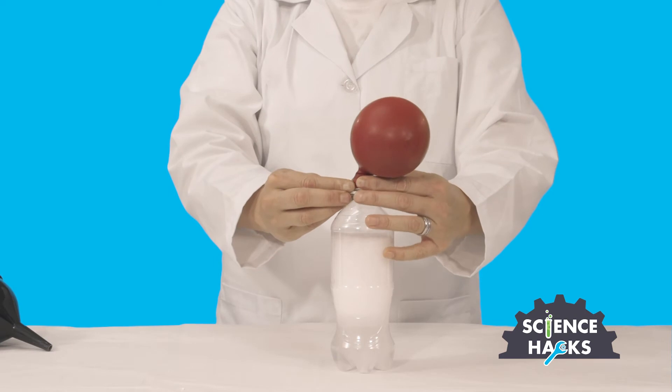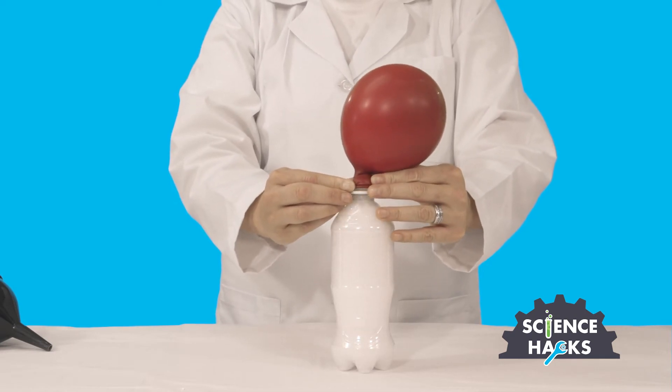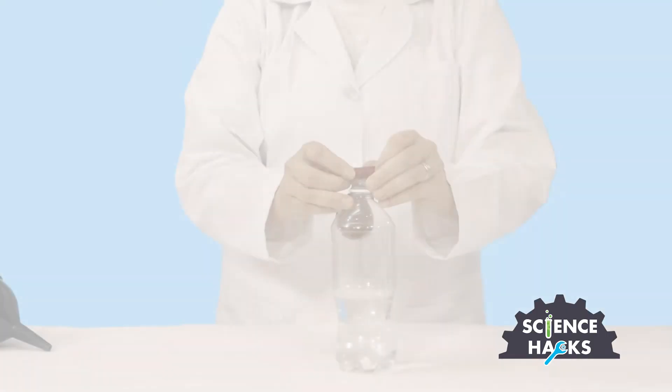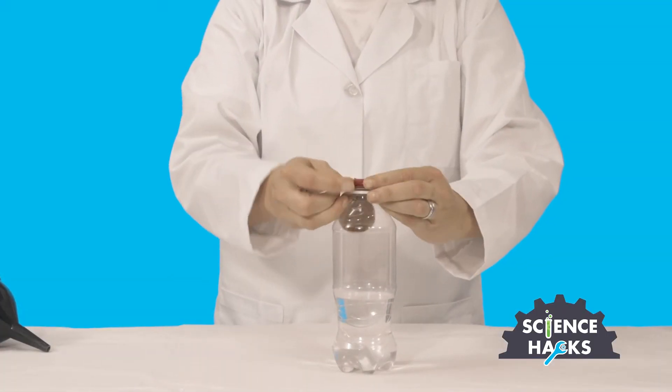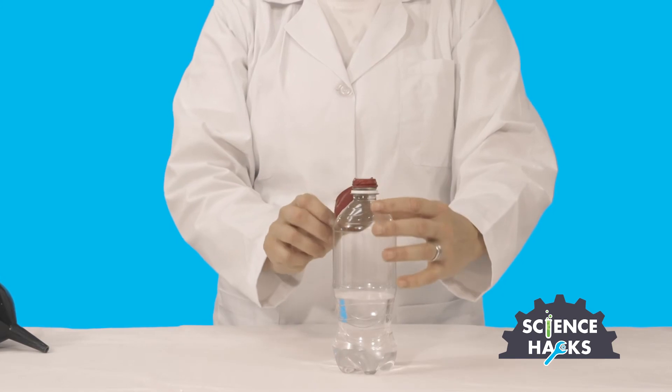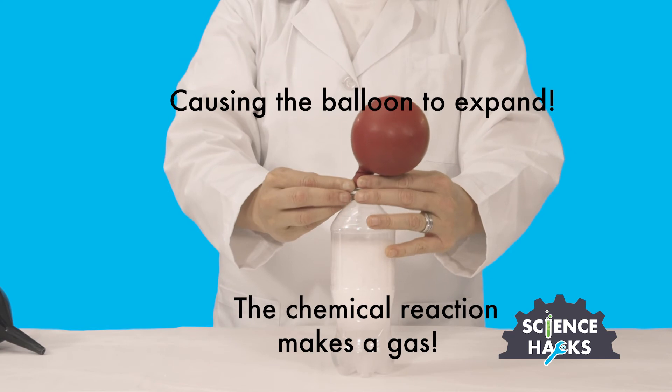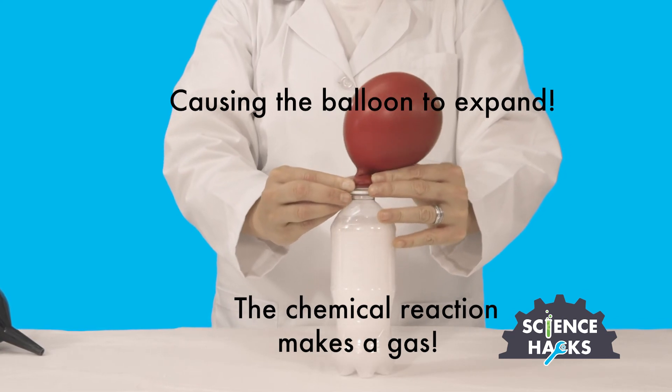What's happening here, Carly? The baking soda and the vinegar create an acid-base reaction and the two chemicals work together to create a gas. As baking soda is added to vinegar, CO2 is produced. Gases need a lot of room to spread out and the carbon dioxide starts to fill the bottle and then moves into the balloon to inflate it.